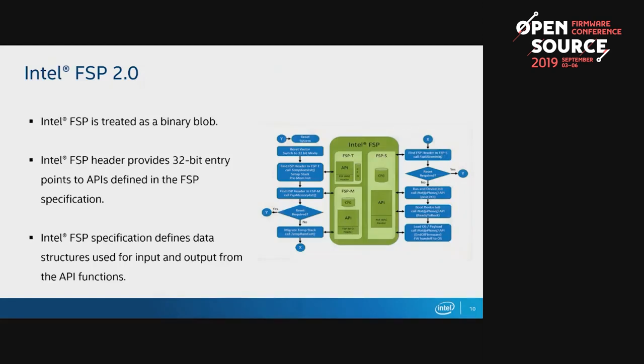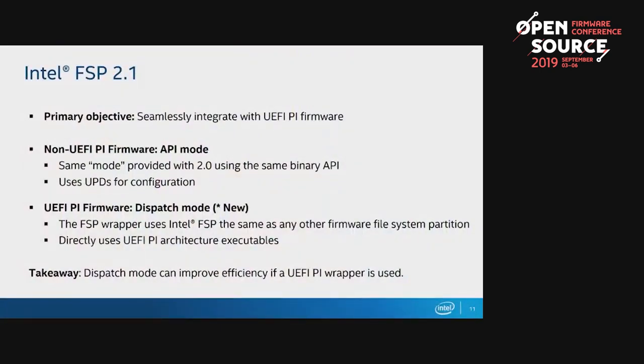Underneath the FSP binary, this is really just EDK2 firmware. At Intel, we write all of this code using the platform initialization specifications — the UEFI PI specs — and underneath that binary you'll find it's just UEFI PI firmware. In fact, we boot this code without using the FSP APIs at all. We just run a straight EDK2 firmware and launch all of this code using the UEFI PI dispatch algorithms, since it's all in firmware volumes with EFI modules that get dispatched and run. What we realized was that using an EDK2 wrapper was very awkward — you're treating this blob like it's not EDK2 code even though it is.